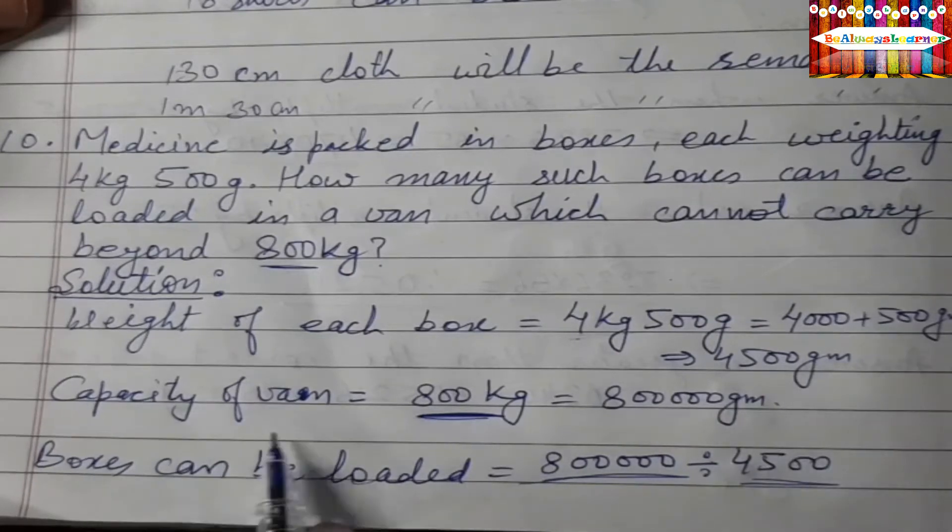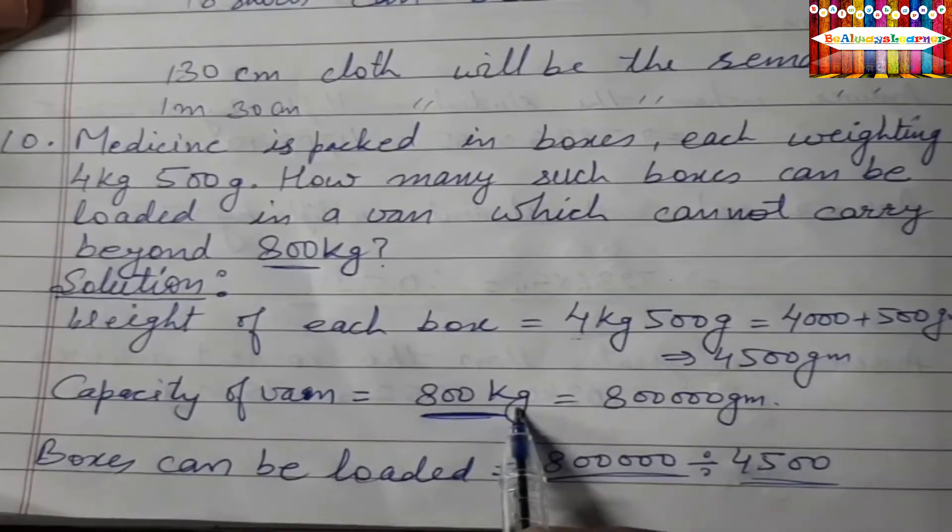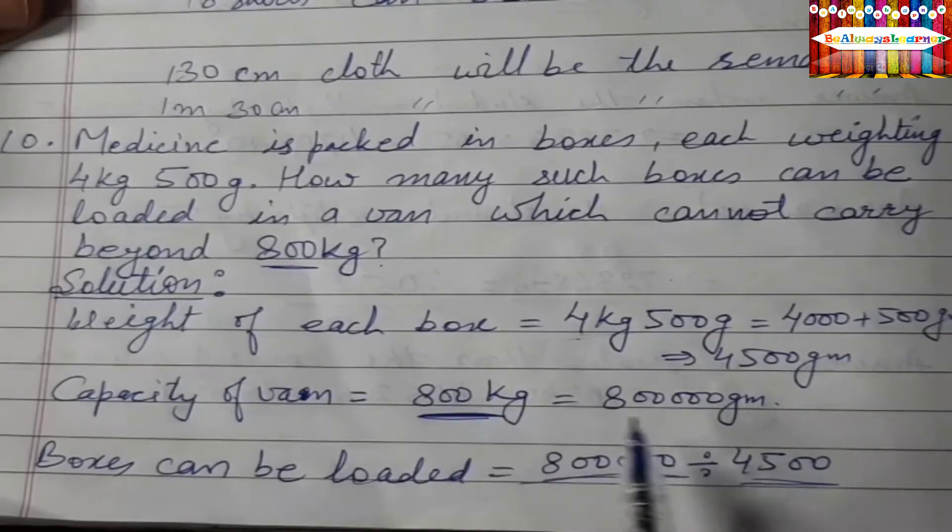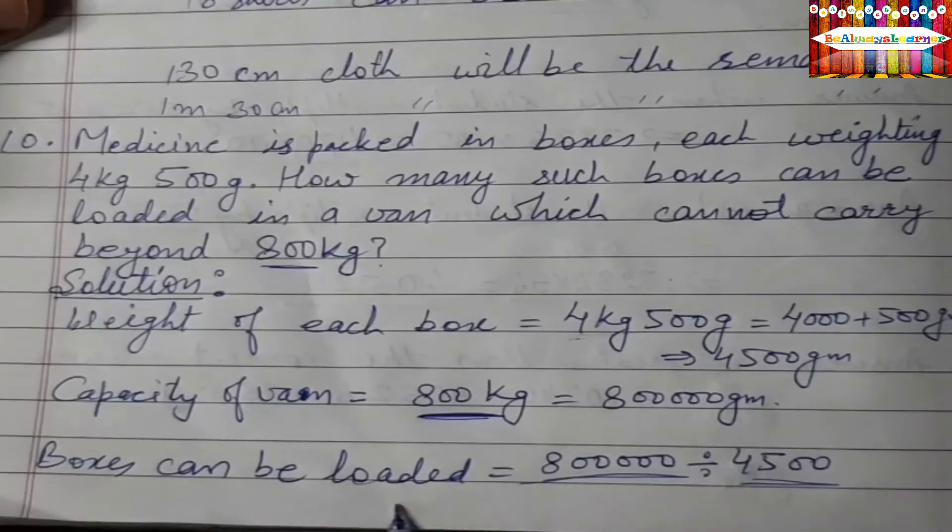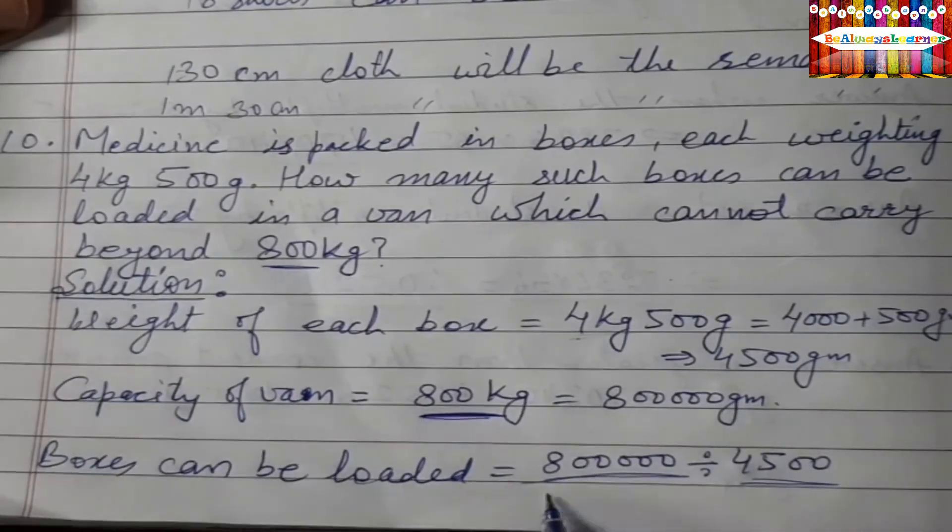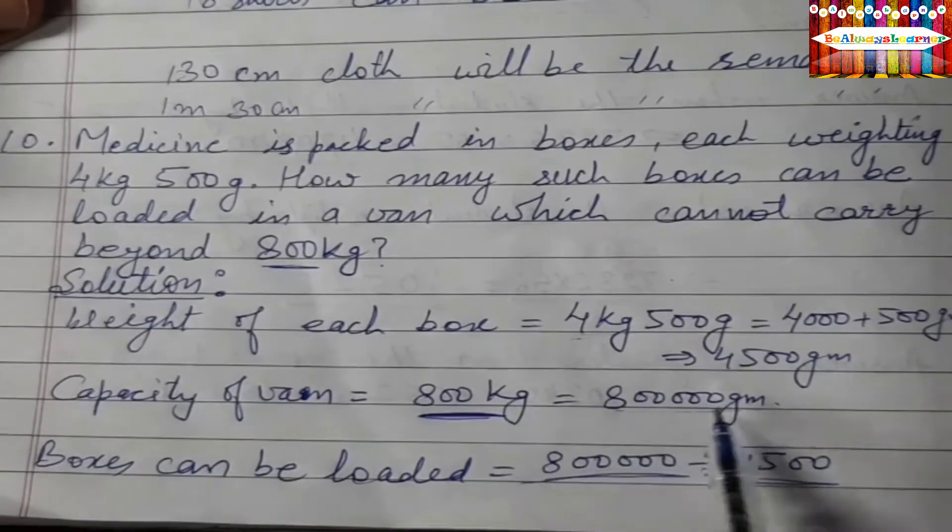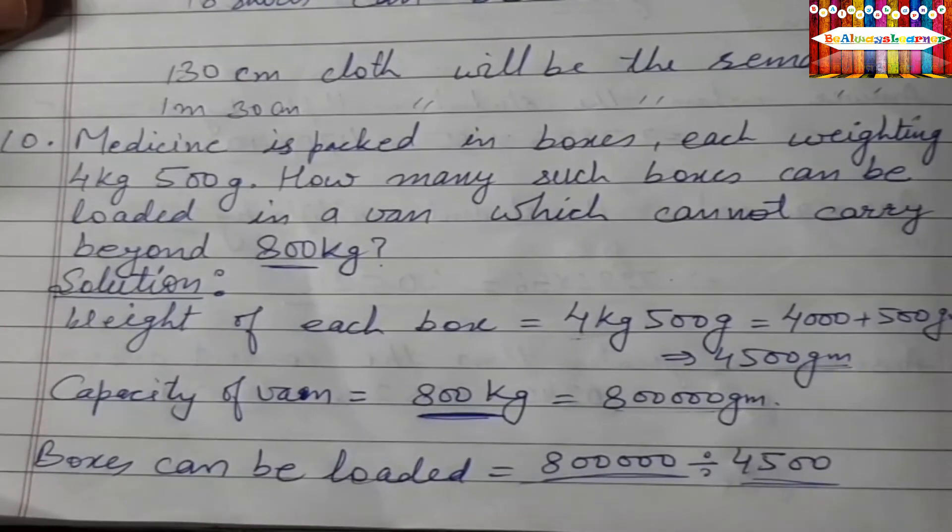Capacity of van is 800 kg, so we have 1 kg equals 1000g, so we have 800,000g. Boxes can be loaded is equal to the total capacity divided by the weight of one box.